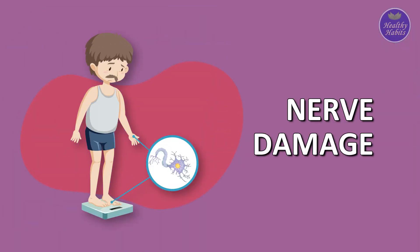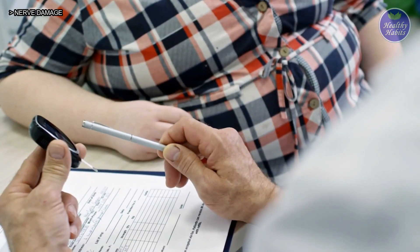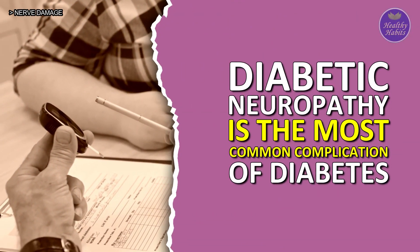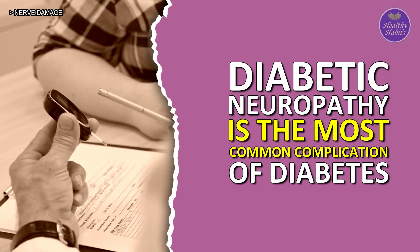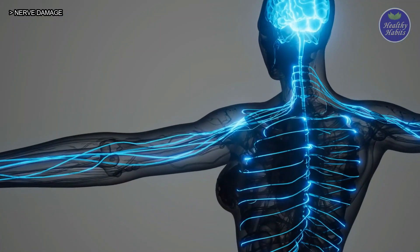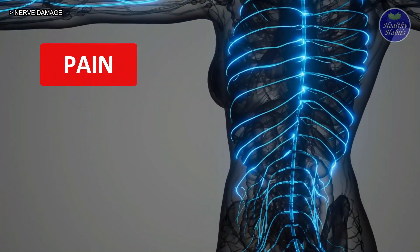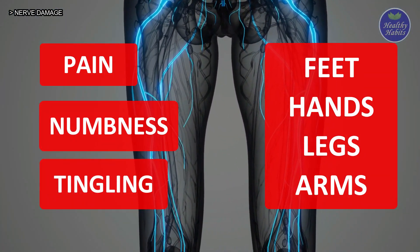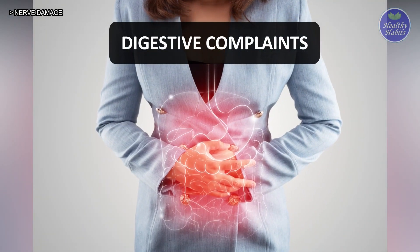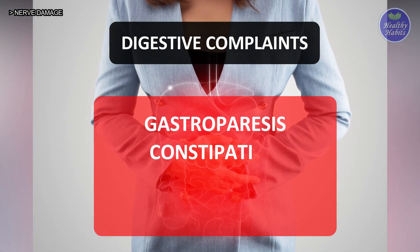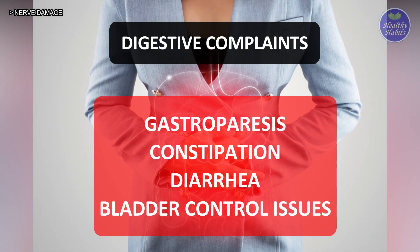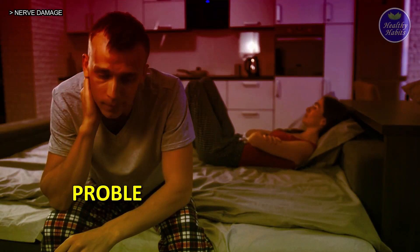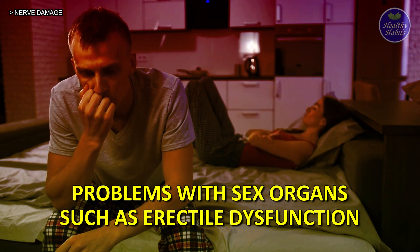3. Nerve Damage. Diabetes can often lead to nerve disorders called neuropathies. Diabetic neuropathy is the most common complication of diabetes. It can give you symptoms of pain, numbness, or tingling in your feet, hands, legs, and arms. You might also have digestive complaints like gastroparesis, constipation, diarrhea, and bladder control issues. The nerve damage can even cause problems with sex organs such as erectile dysfunction.